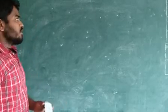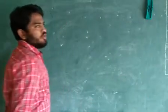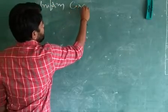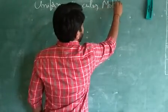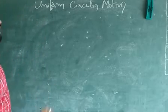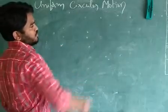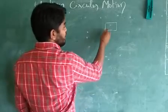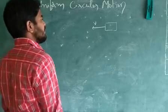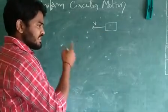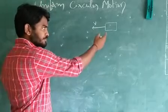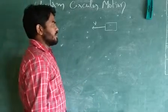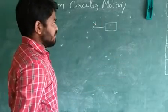Good morning everyone. As my student asked about uniform circular motion, let me explain the topic. Before entering into the topic, let us see what circular motion is and how it happens. Let us take a small block of mass m which is moving in a straight line with velocity v. It has uniform velocity, meaning its direction as well as magnitude are both constant. We know that velocity is a vector quantity — it has both direction and magnitude.